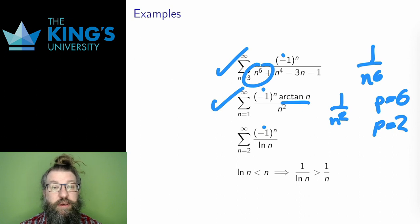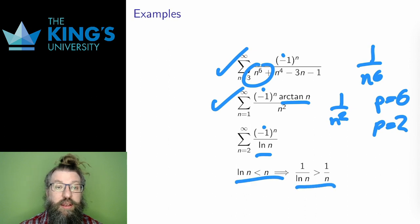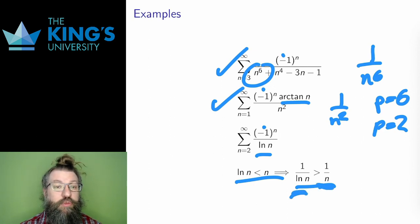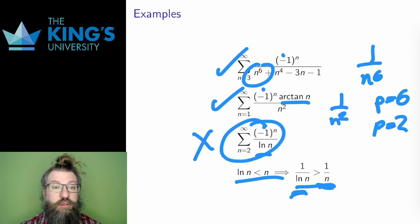Then consider this last series. Since the logarithm is less than n, in the reciprocal 1 over ln(n) is larger than 1 over n. The asymptotic order of 1 over ln(n) is larger than the asymptotic order of 1 over n, and 1 over n is already divergent — that's the harmonic series. Therefore this series diverges in absolute value, which means it is not absolutely convergent; it is conditionally convergent. It does converge by the alternating series test, but it does not converge absolutely by asymptotic comparison.